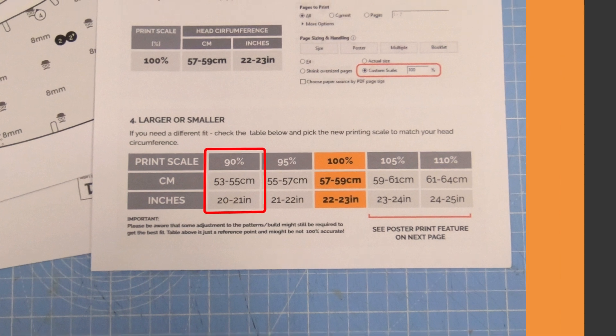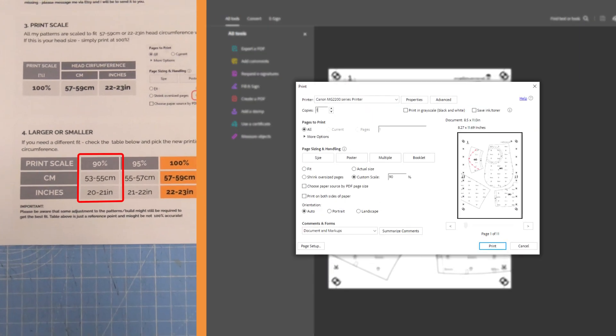Simply open the pattern PDF file with Acrobat Reader or Foxit, adjust the printing scale to 90%, and click print.